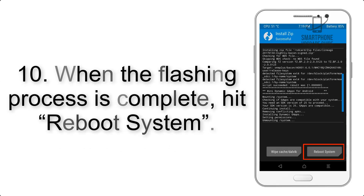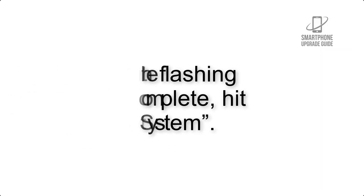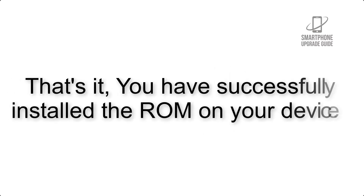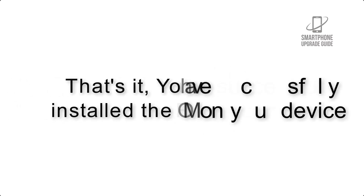Step 9: After GApps flashing completes, select Wipe Cache and Dalvik from the bottom left side of the screen and swipe to wipe. Step 10: When the flashing process is complete, hit Reboot System. That's it — you have successfully installed the ROM on your device.